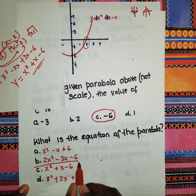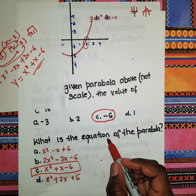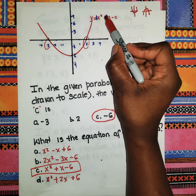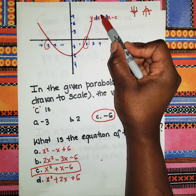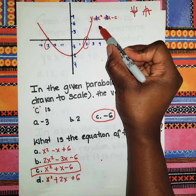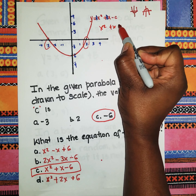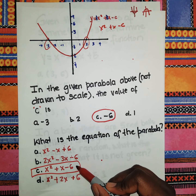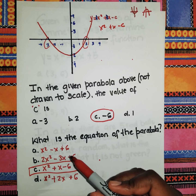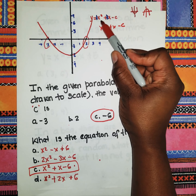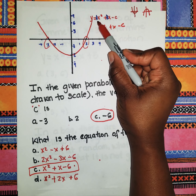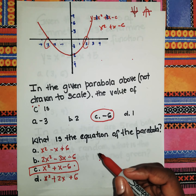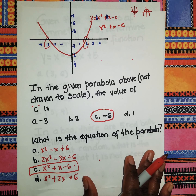So x² + x − 6 is our equation, where c = 6. If we hadn't been shown the graph, we might not have known whether 'a' was greater than or less than one — that's why we went through that method.